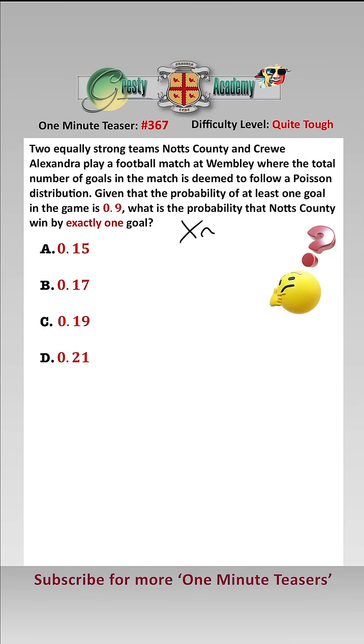We have that the total goals follows a Poisson distribution. We need to find lambda given that the probability the number of goals equals 0 is 0.1.